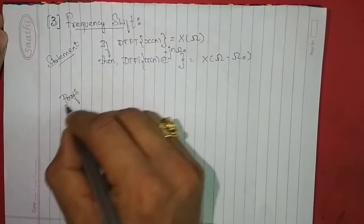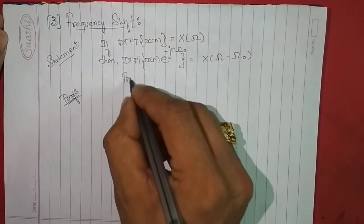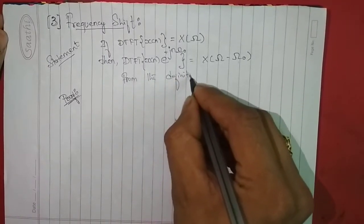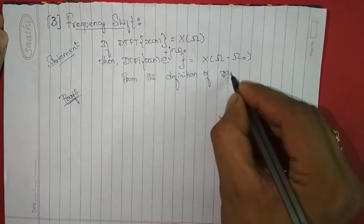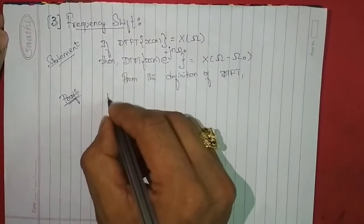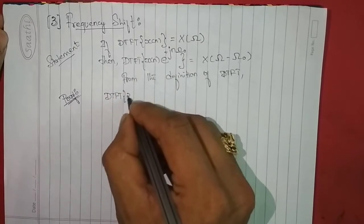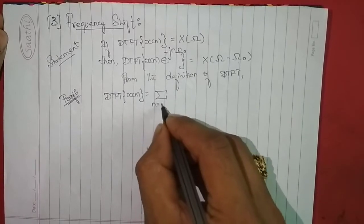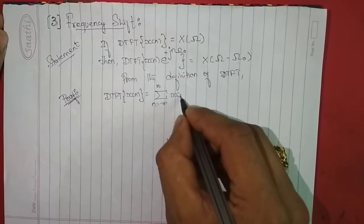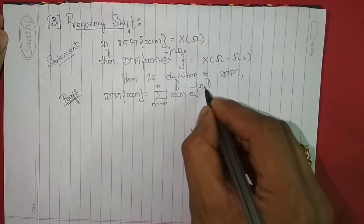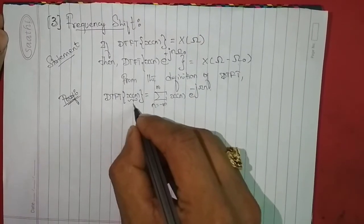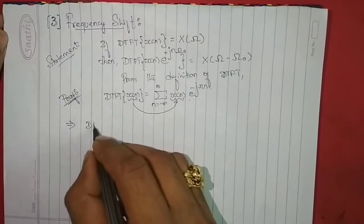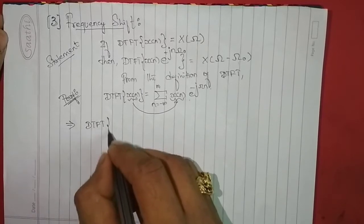For the proof, we know that from the definition of DTFT, X(ω) of x(n) is equal to the summation from n = -∞ to +∞ of x(n) e to the power of -jωn.